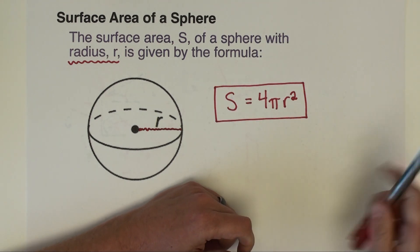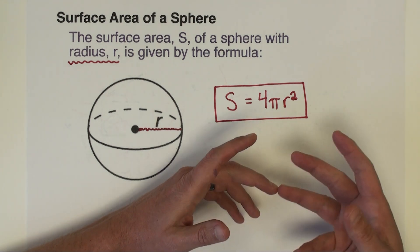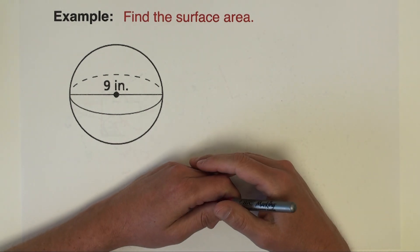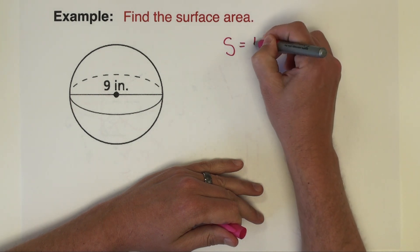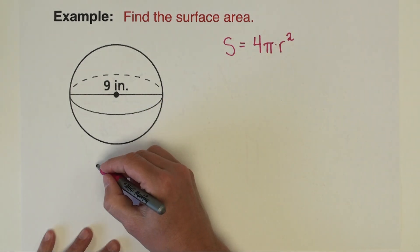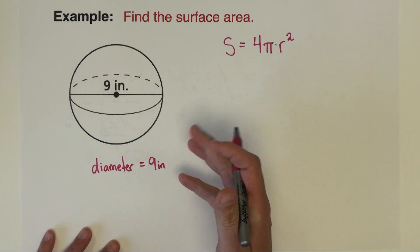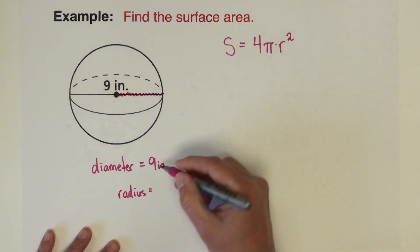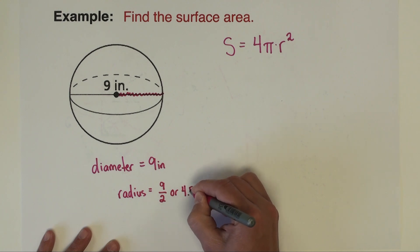We're going to do a few example problems illustrating the use of this formula with a variety of starting conditions. Our first problem: we've got a sphere and we want to find its surface area. The surface area formula is 4π times radius squared. What's given is the diameter, which is nine inches. We can easily convert to radius — the radius is just half of the diameter, so half of nine is nine halves, or 4.5.